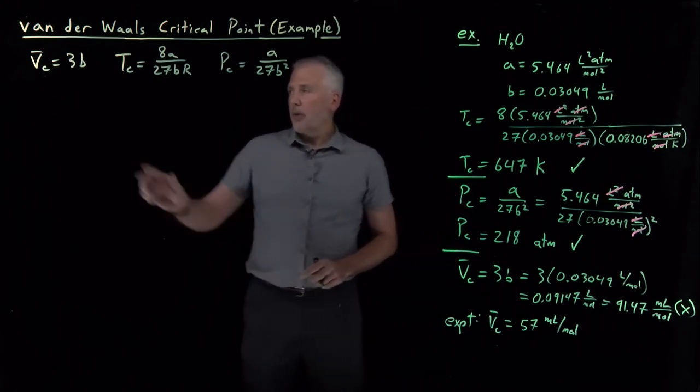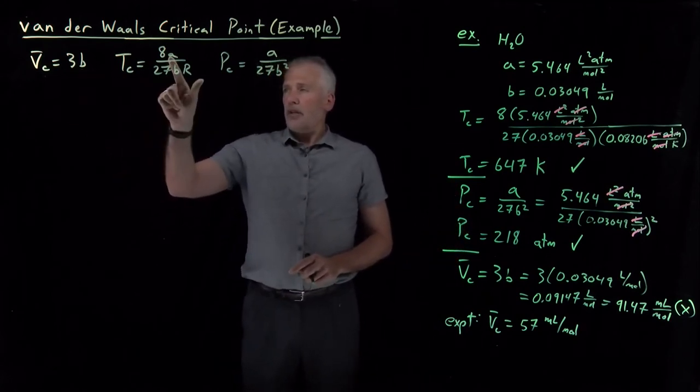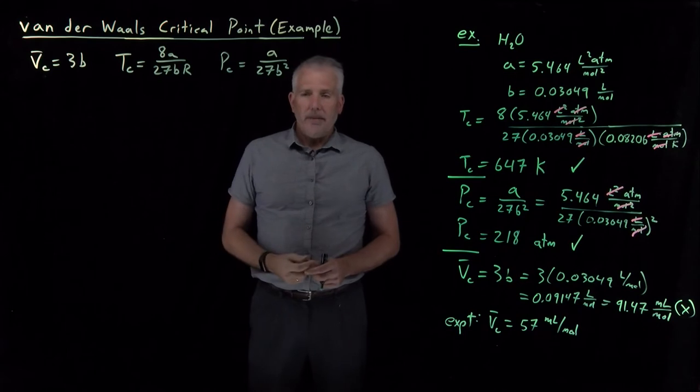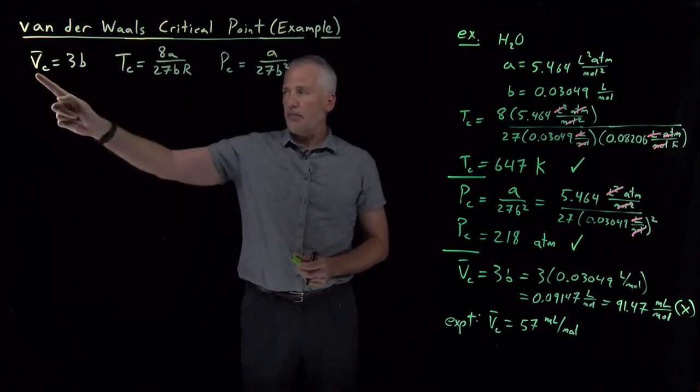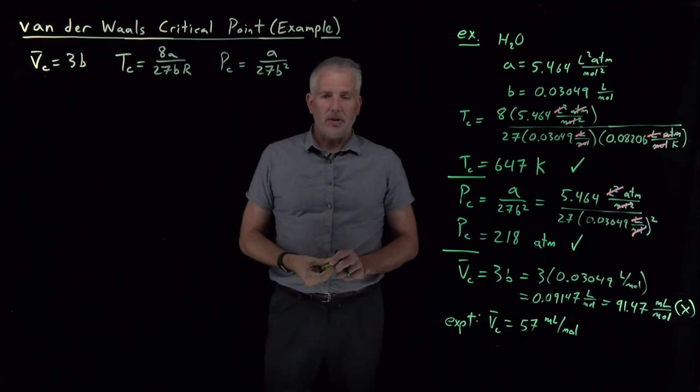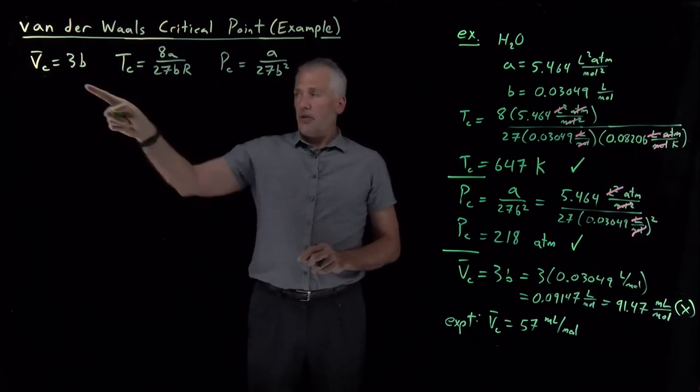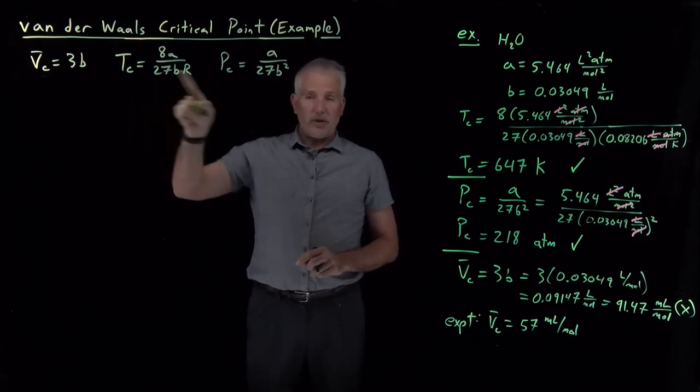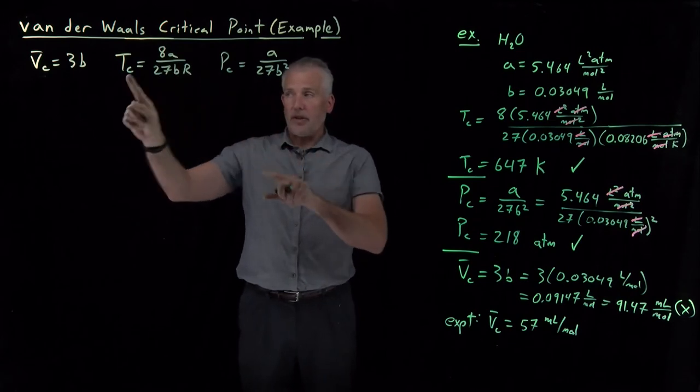In fact, if we go back to these equations, we have two Van der Waals coefficients, A and B, and we have three critical constants - molar volume, temperature, and pressure. We can do that conversion in the direction we've got here. If we know A and B, we can calculate the critical constants.